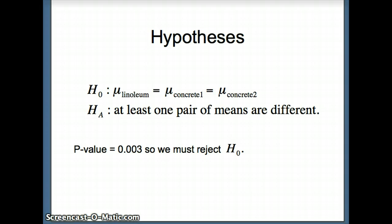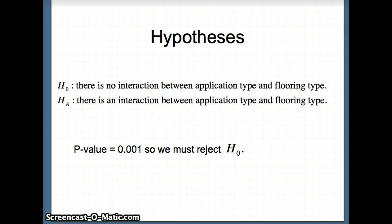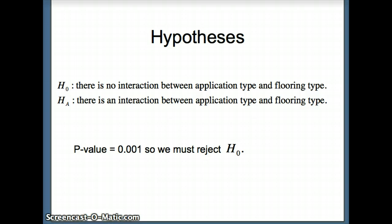The most interesting result in the two-way ANOVA is the interaction. Our third hypothesis test is H0: there is no interaction between application type and flooring type, versus HA: there is an interaction. The p-value is 0.001, a very small p-value, so we reject H0. We conclude that there is an interaction between application type and flooring type. That's really the strength of the two-way ANOVA. And that will conclude this lesson.